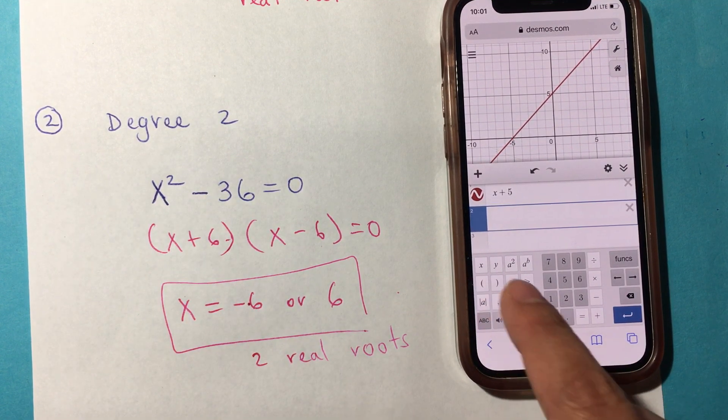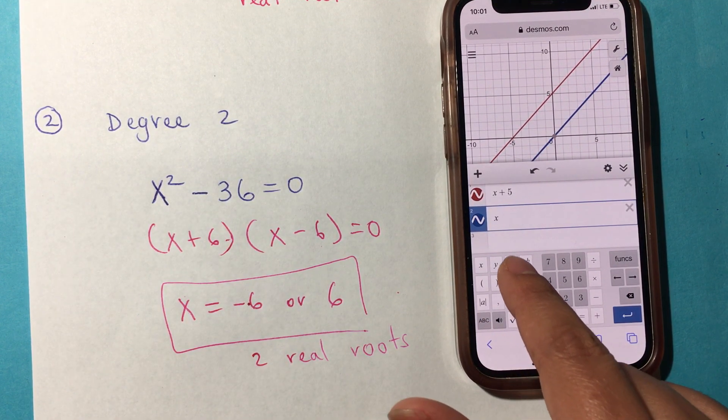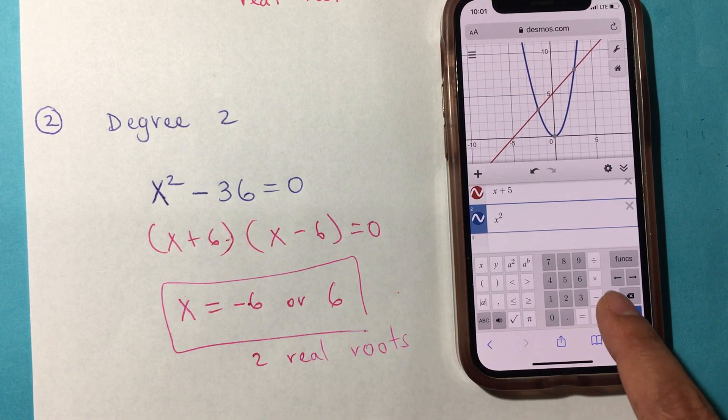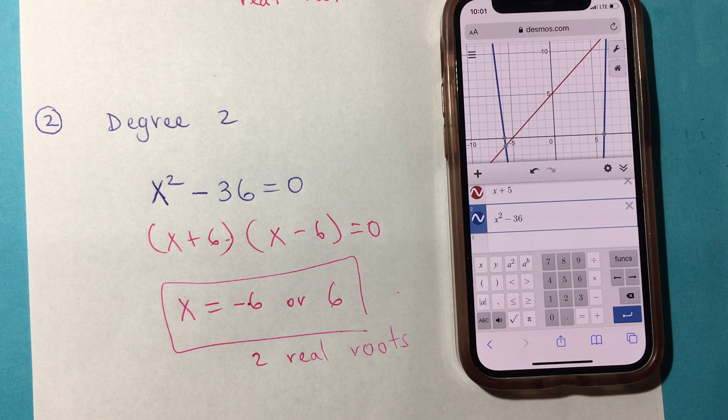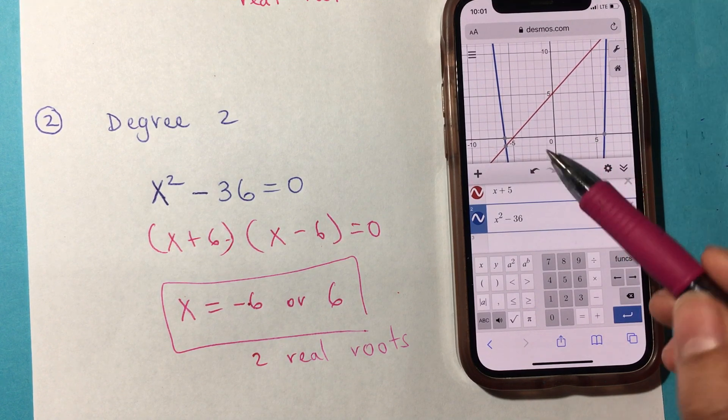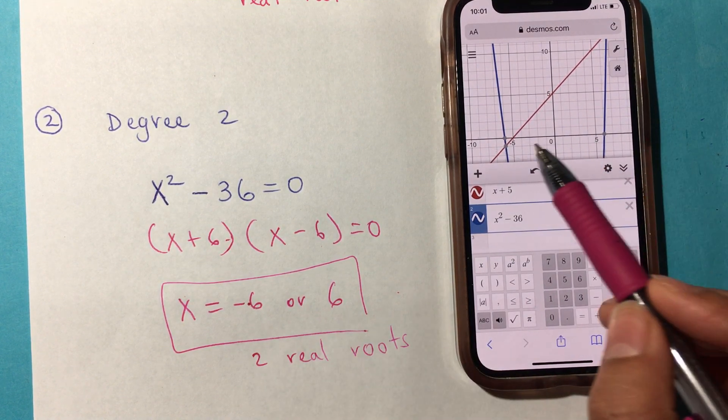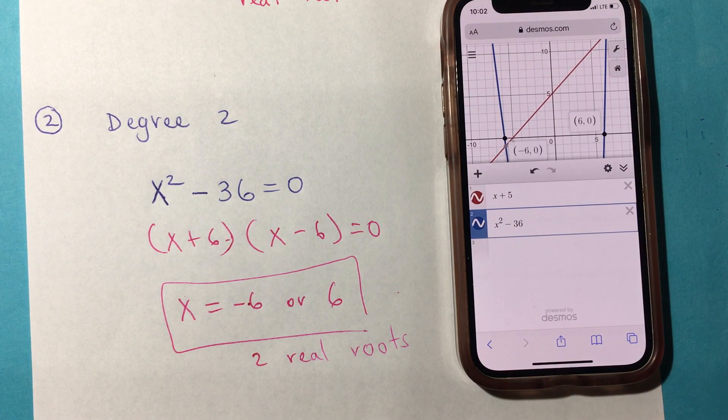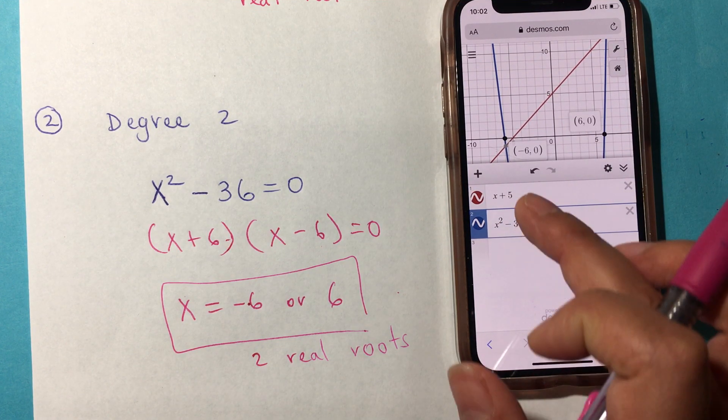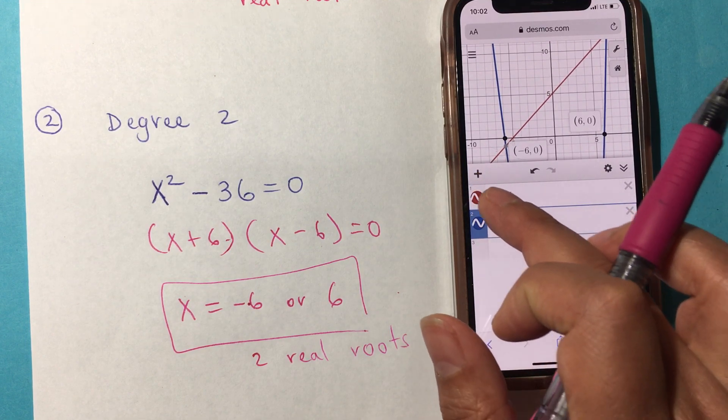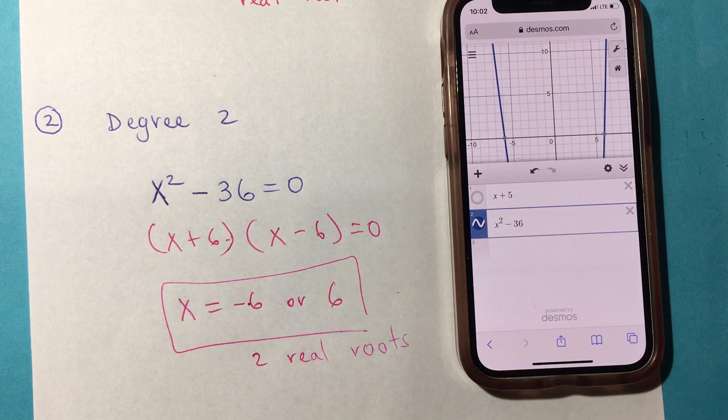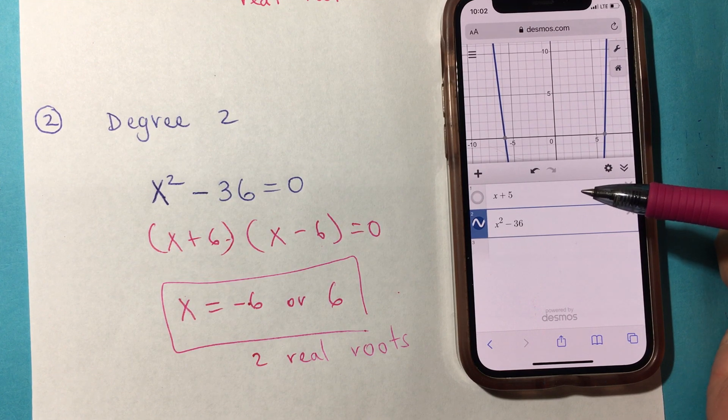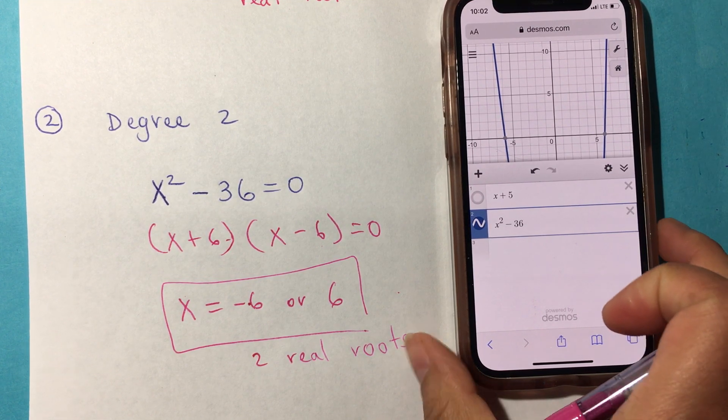x squared minus 36. If you notice, that's negative 6 and positive 6. You can even press the dots and they'll show you the coordinates. You can remove the other one by pressing this graph, and the graph disappears. This is a pretty cool resource online that you can get for free.